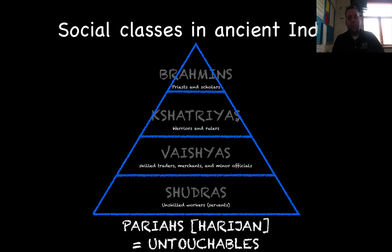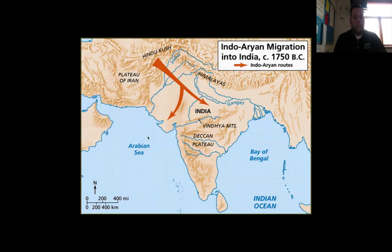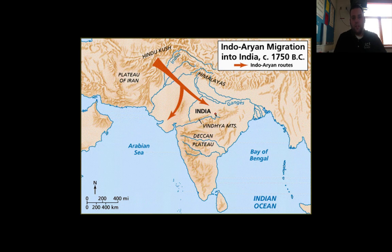The Purushas, or Harijans, are your Untouchables — nobody wants to be an untouchable. This map shows the Aryan migration into India. There's a pass here in the Hindu Kush mountains through which they were able to come in and spread their views and ideas.